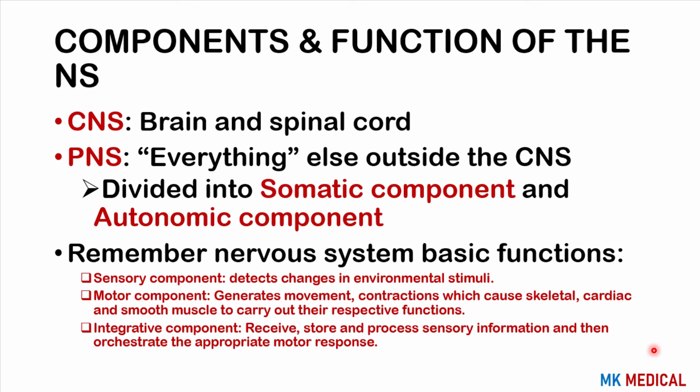The nervous system is divided mainly into two parts. There is the central portion, known as the central nervous system (CNS), consisting of the brain and the spinal cord. Then everything outside the CNS is referred to as the peripheral nervous system (PNS). The PNS is further subdivided into a somatic component — somatic meaning body, under voluntary control — as well as an autonomic component, which is automatic, meaning it's under involuntary control.